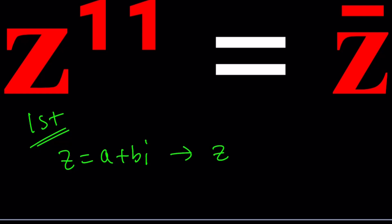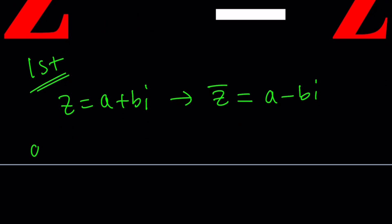So Z equals A plus B I. And then of course, if Z is that, then Z conjugate or Z bar is just going to be A minus B I. So to find the conjugate of a complex number, I just negate the imaginary part. Real part stays the same. Make sense? And the conjugate is a special number, because when you multiply Z and Z bar, you get a real number. If you add them, you get a real number. So that's unique. Now let's go ahead and plug it in. We're going to raise this guy to the 11th power and set it equal to its conjugate.